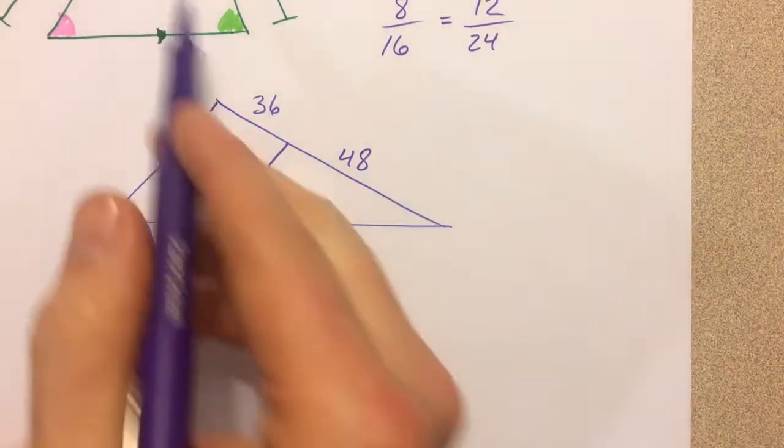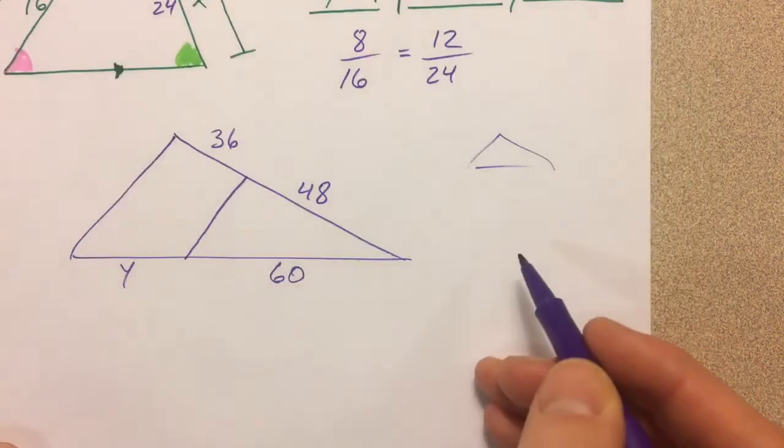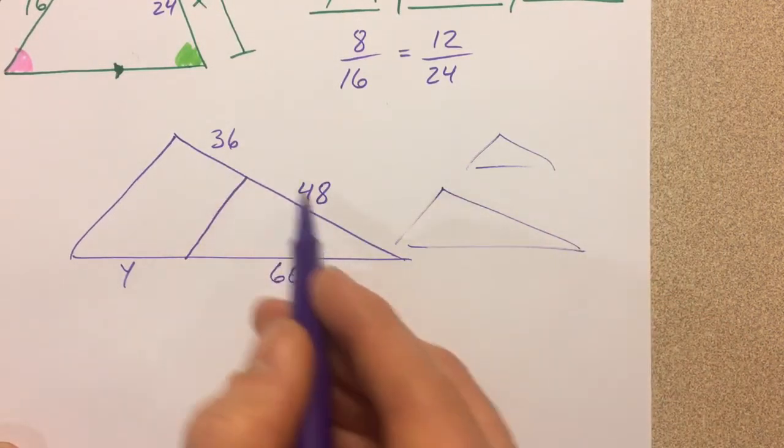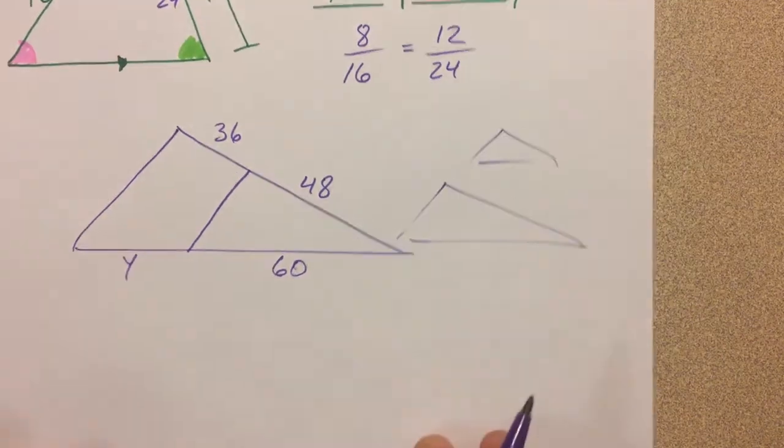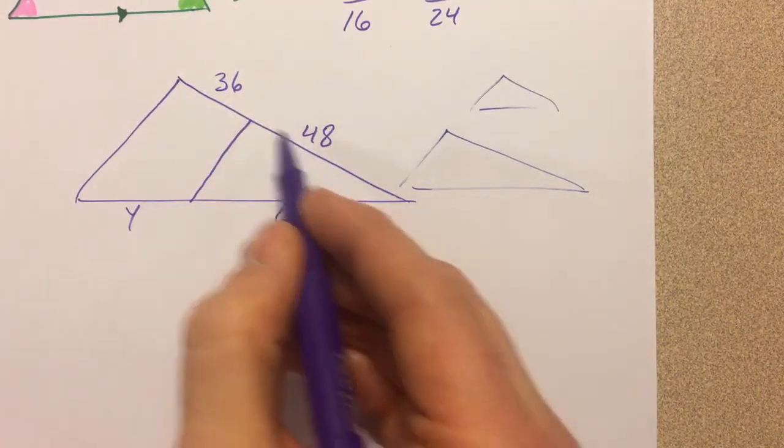What I could do is I could use the similar triangles that we had done and compare the smaller triangle to the bigger triangles. I can add these 36 and the 48 up, or I could just compare the 48 to the 36.